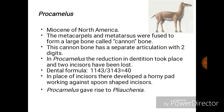Procamelus was observed in the Miocene. The metacarpus and metatarsus were fused to form a large bone called the cannon bone, which has separate articulation with the two digits. Reduction in dentition took place and two incisors were lost. The dental formula was 1 incisor, 1 canine, 4 premolars, and 3 molars in the upper jaw. In place of the missing incisors, a horny pad developed, working against the spoon-shaped lower incisors. Procamelus gave rise to Poebrotherium.